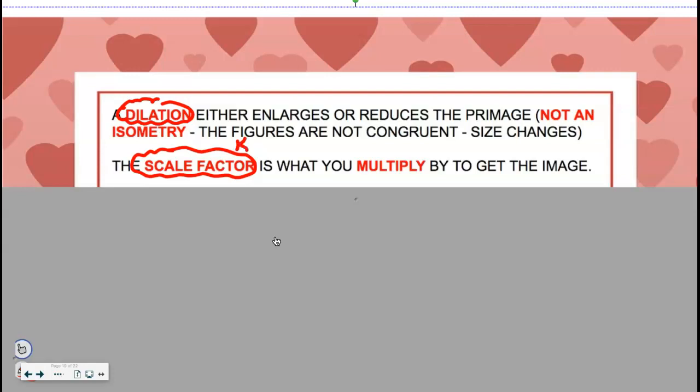A scale factor is the number that you multiply by to get the image. Sometimes in math we call that k. Like if I wanted to double Avery's height, I'd multiply it by two and she'd get twice as tall. If I wanted to make her a third of her height, I'd multiply by one-third.